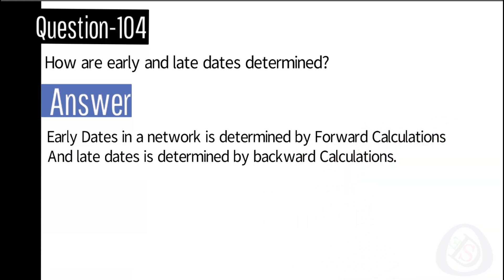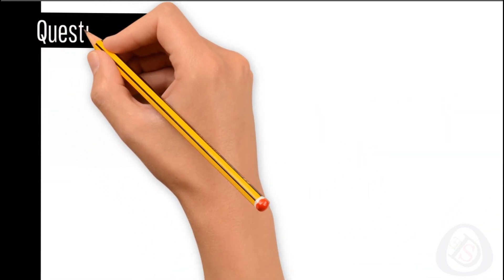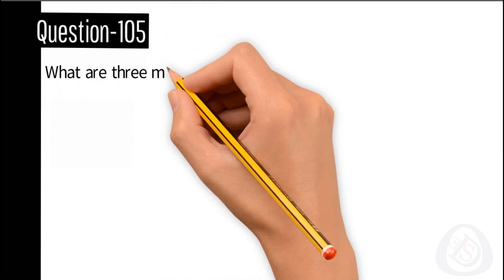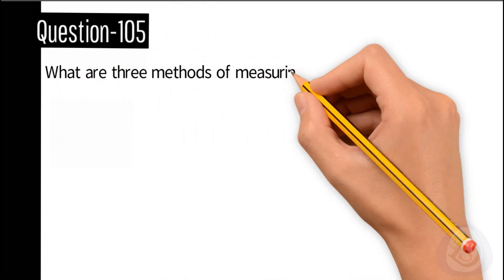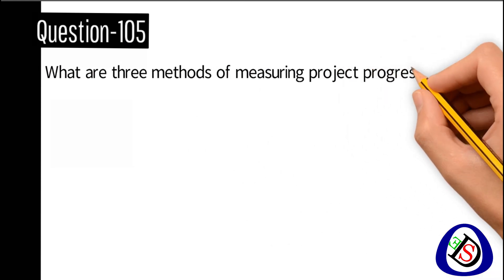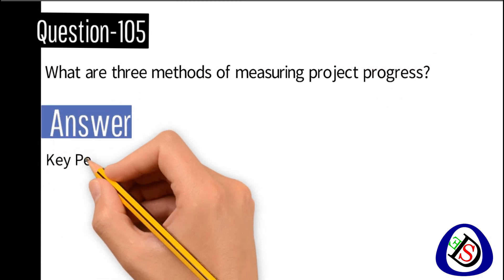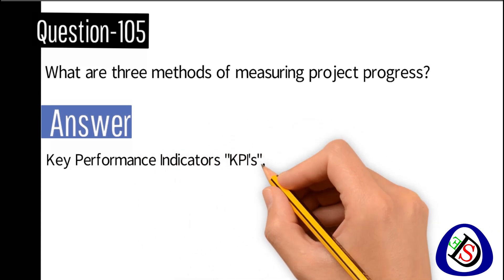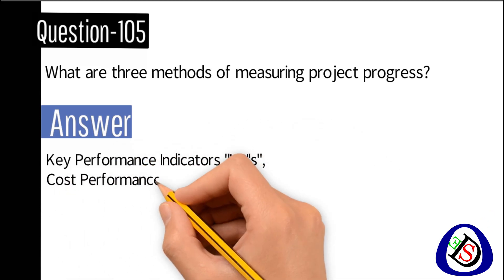Question number 105: What are three methods of measuring project progress? Answer: Key performance indicators (KPIs), cost performance index (CPI), and schedule performance index (SPI).